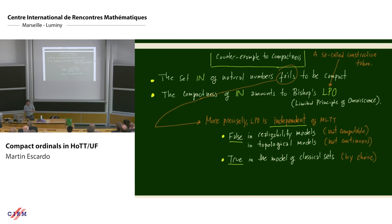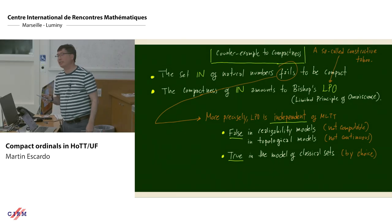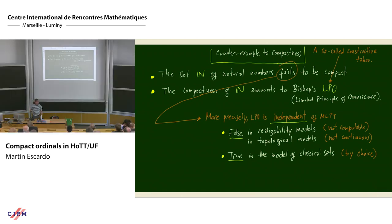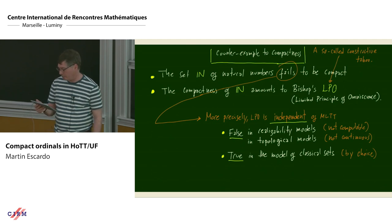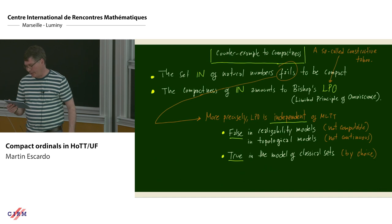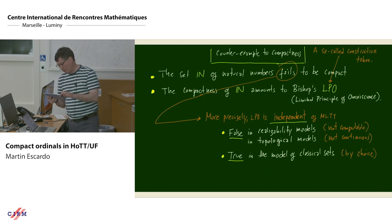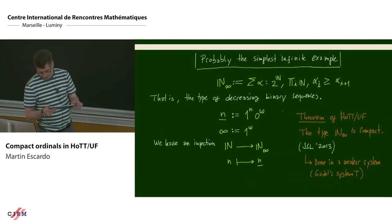The set of natural numbers fails to be compact — or rather, it is compact if and only if LPO (the Limited Principle of Omniscience) holds, which says from any binary sequence you can either find a position where it is 1 or say that all positions are 0. This is independent of Martin-Löf type theory: it is false in realizability models because it's not computable, false in topological models because it's not continuous, and true in the model of classical sets by excluded middle.